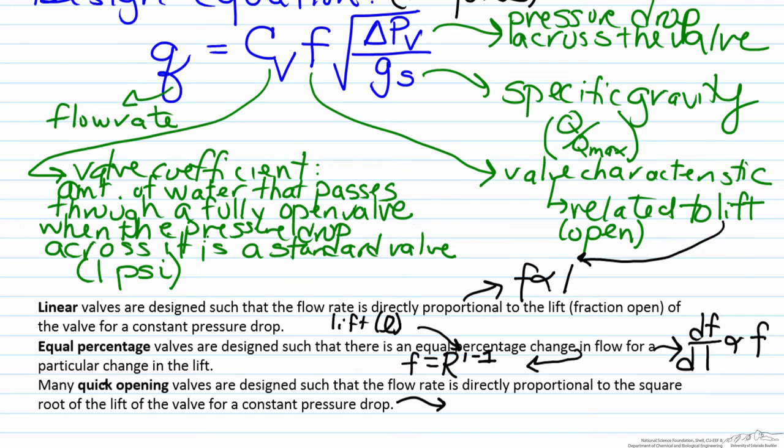Quick opening valves are done such that the valve characteristic F is related to the square root of the lift. For a quick opening valve, as the name indicates, when we open the valve very slowly a lot of flow comes out. Therefore these valves are designed such that at low flow rates you get more of the flow coming out, and then when the valve gets more open you get diminishing returns on it.